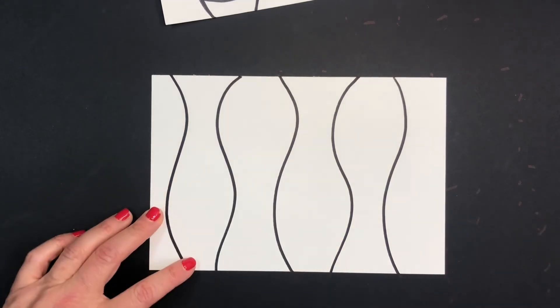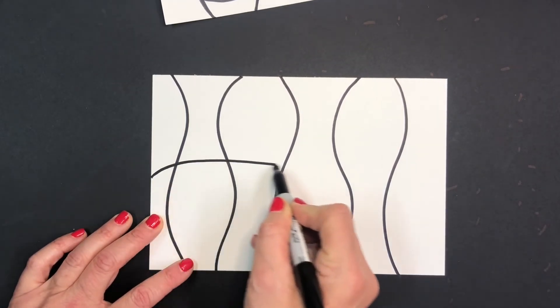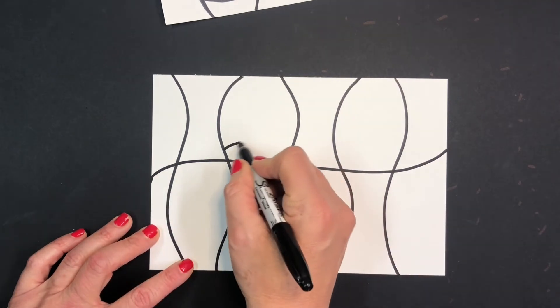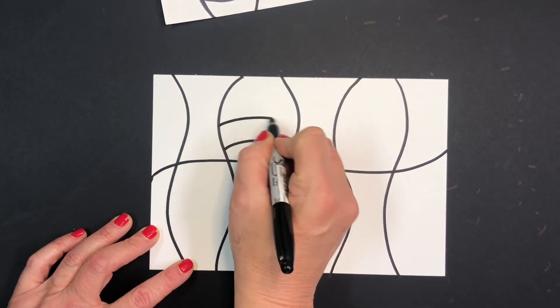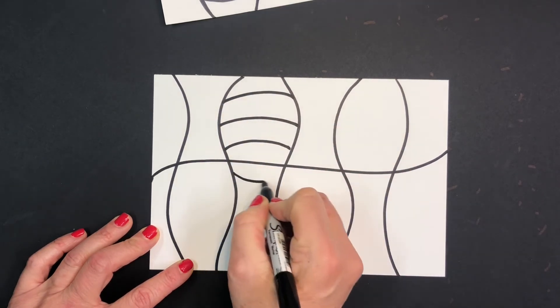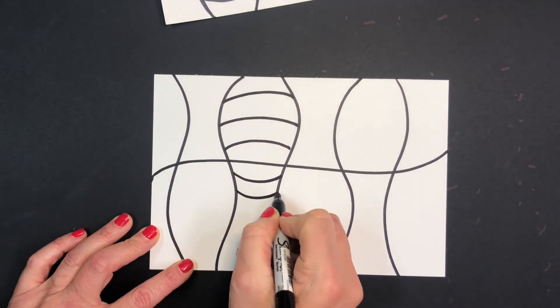And then you draw your center line, curved line in the center, and it's the same idea. Curved lines go up and they go under, below the middle line.